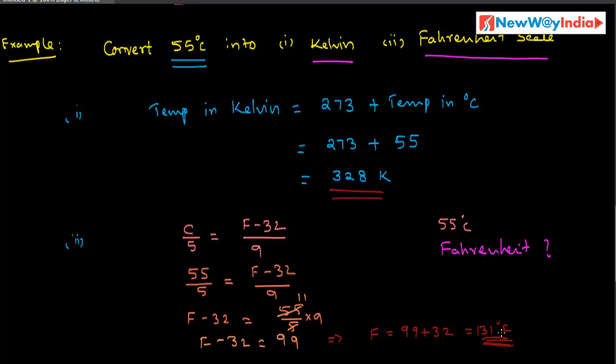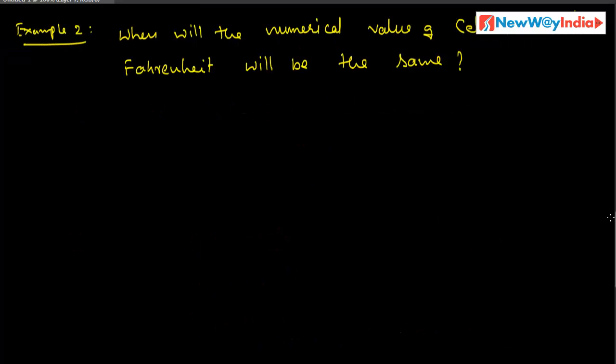In this way we can convert one measurement into another measurement by using these formulas. Now let us consider another example: what is the numerical value on the Fahrenheit scale and Celsius scale that are equal to each other? We need to find those values.